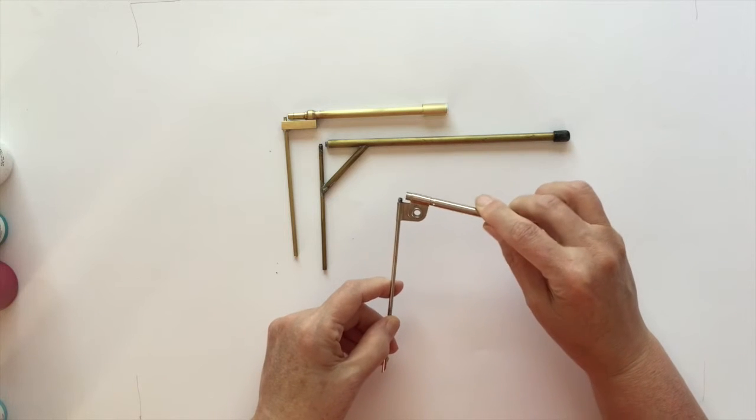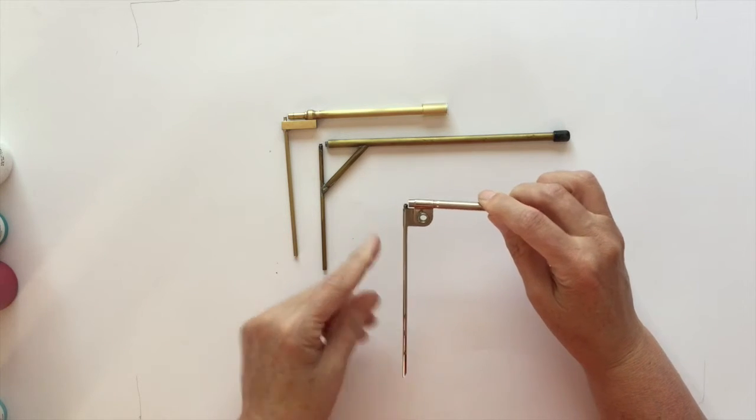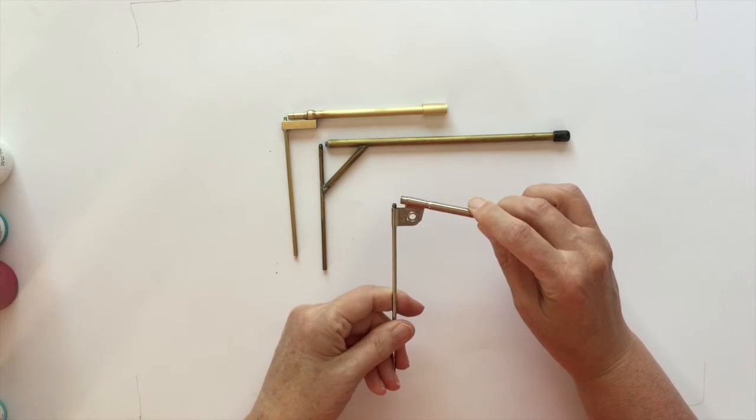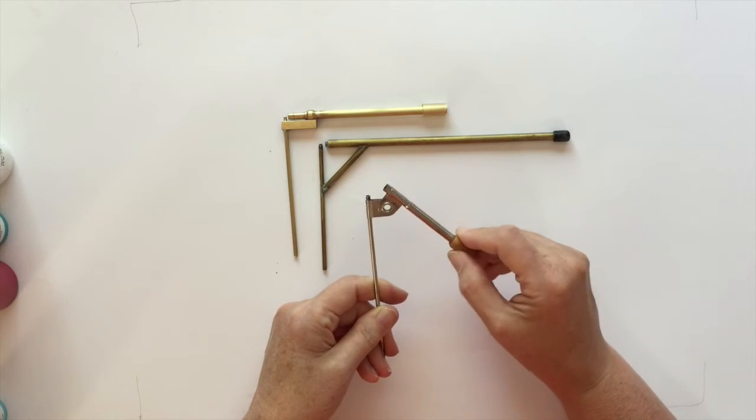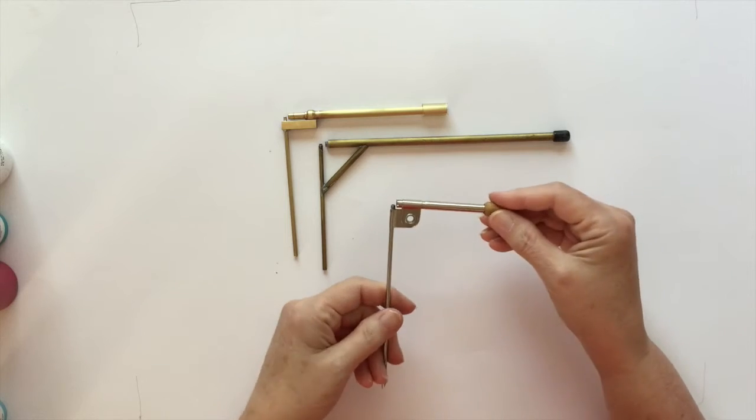The other problem with this is when you go to spray, you have to get the angle of this to this just right. Of course, once you get it right, it's really hard to keep it there because it bends like this. So that is one option.